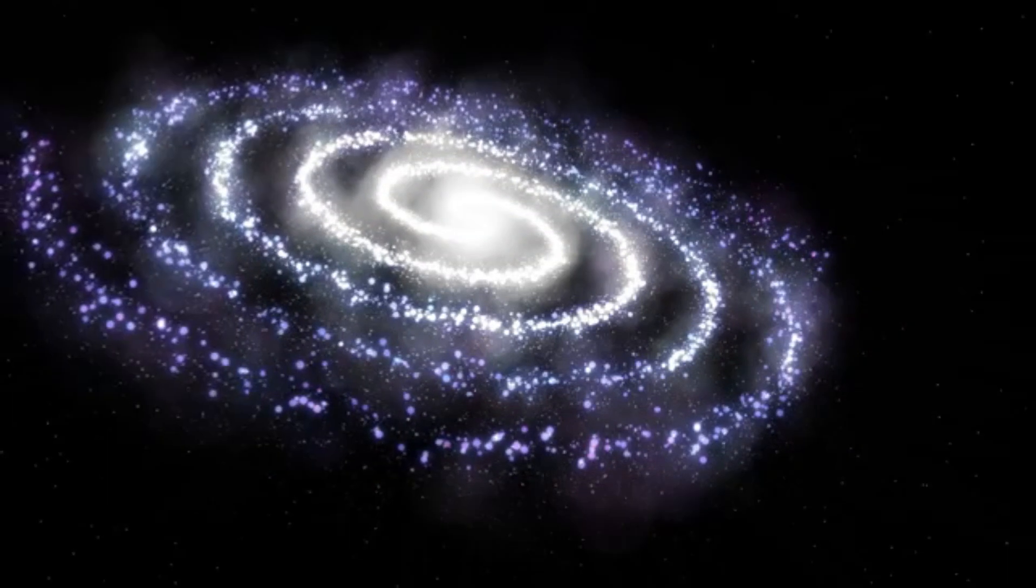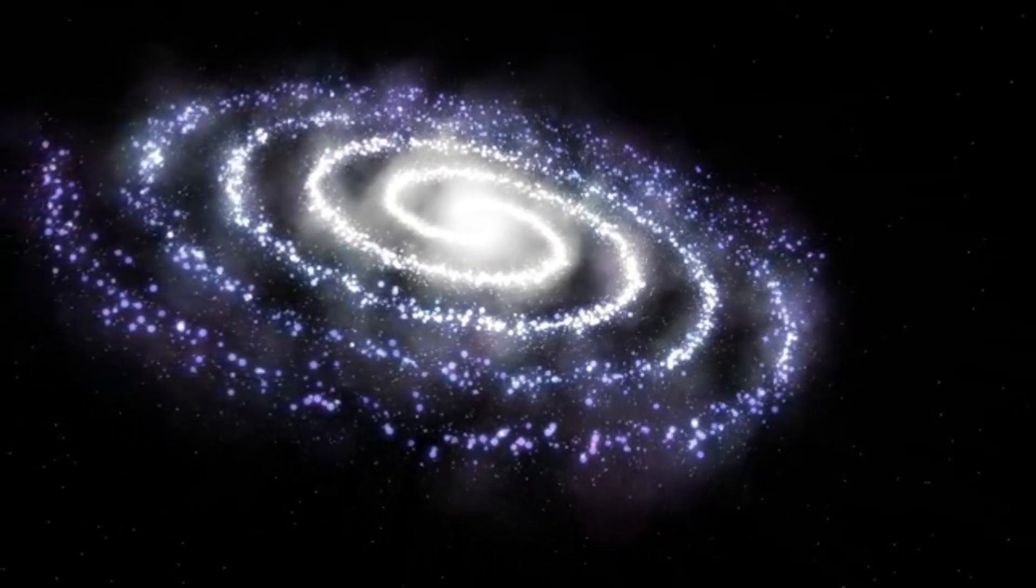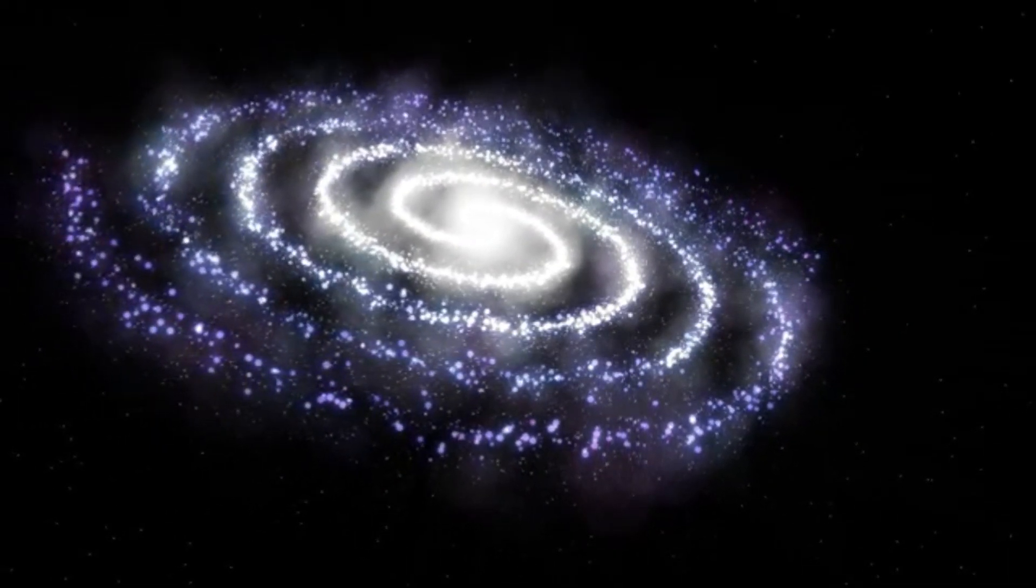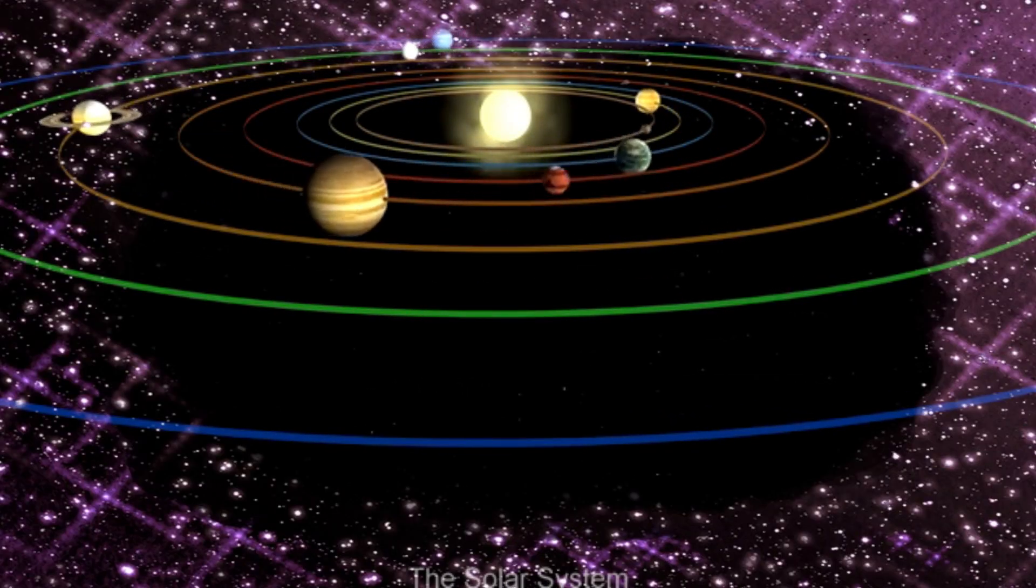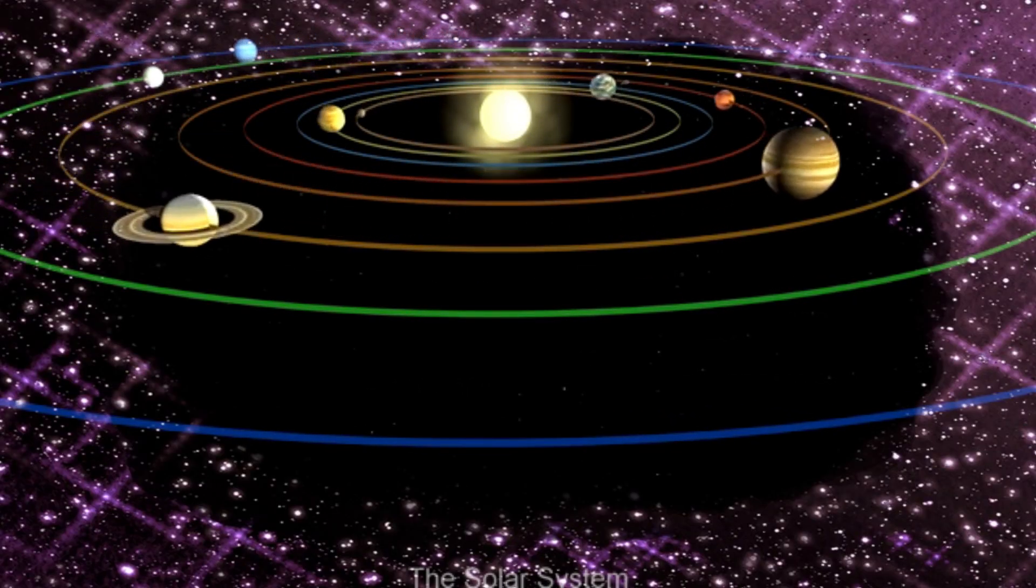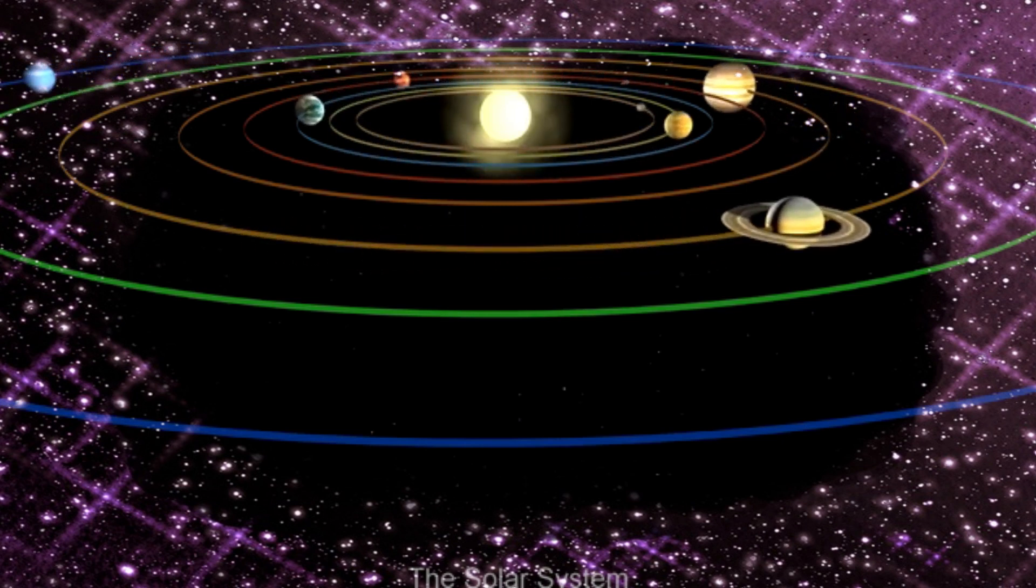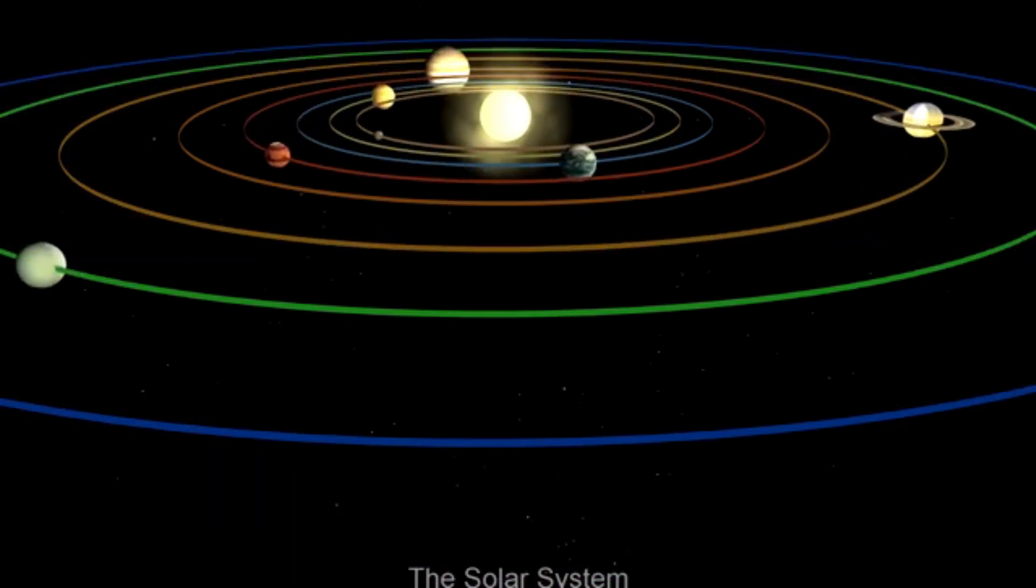Along with these stars, our galaxy consists of the solar system. What is solar system? Solar system is a family of Sun. Sun is the head of the solar system.